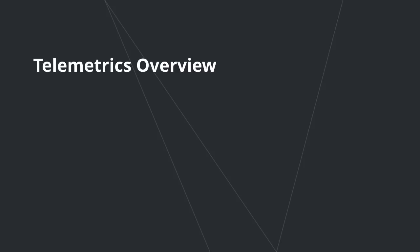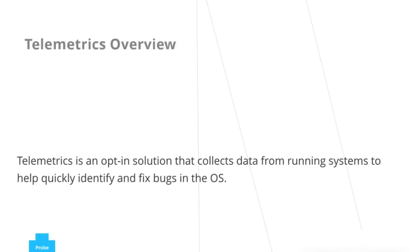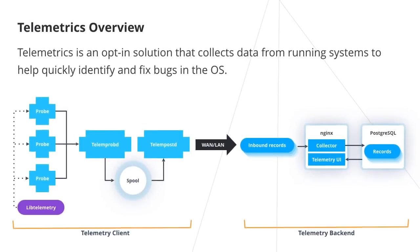Telemetrics on Clear Linux is an opt-in solution that collects data from running systems to help quickly identify and fix bugs in the OS. Telemetrics is a combination word composed from telemetry and analytics, encompassing both the gathering and analysis of crash and debug information.